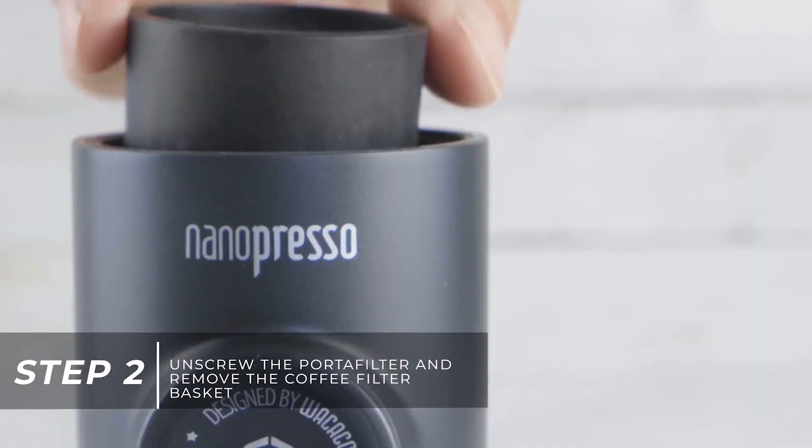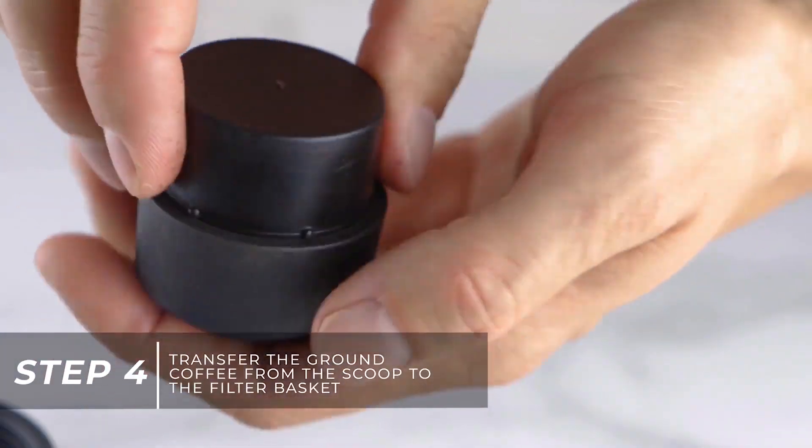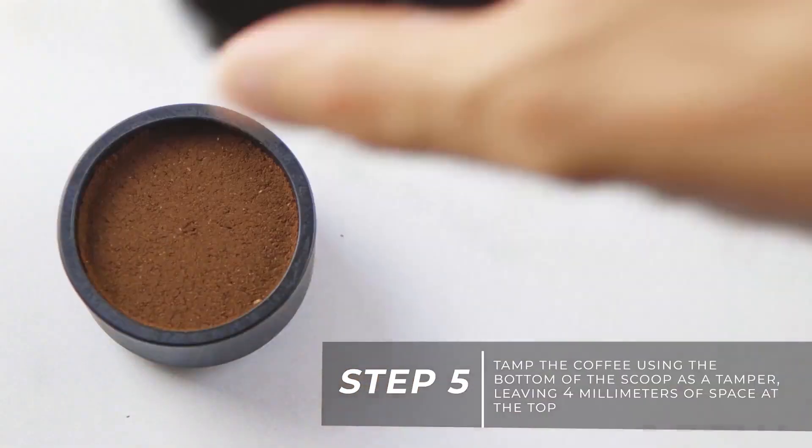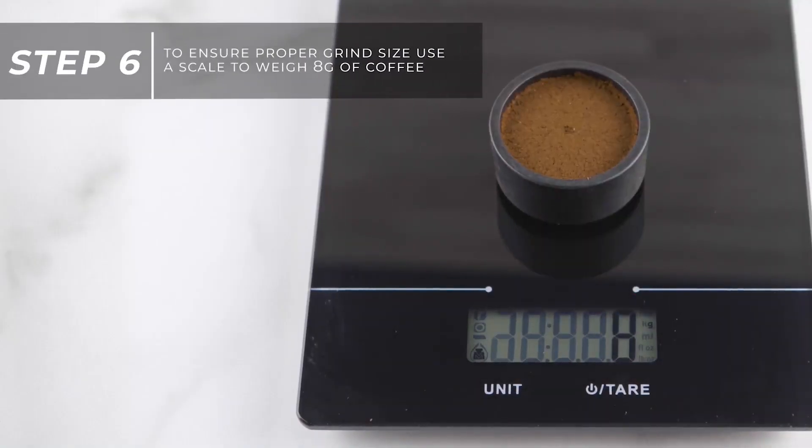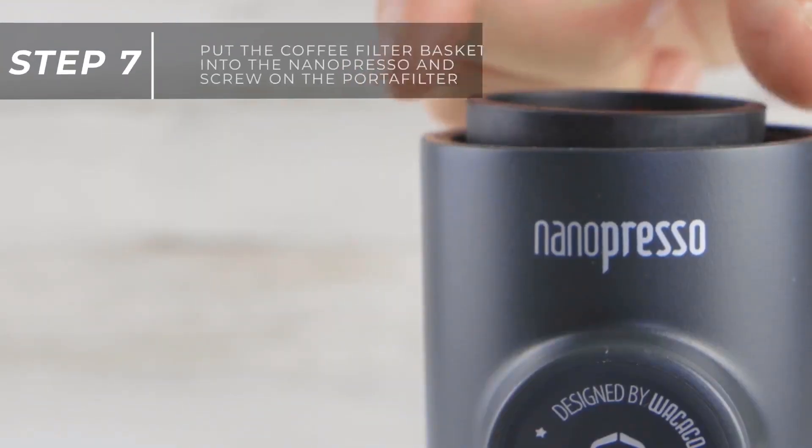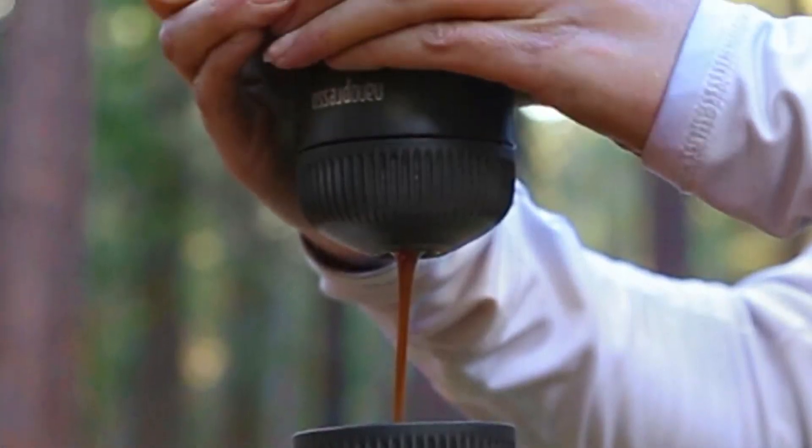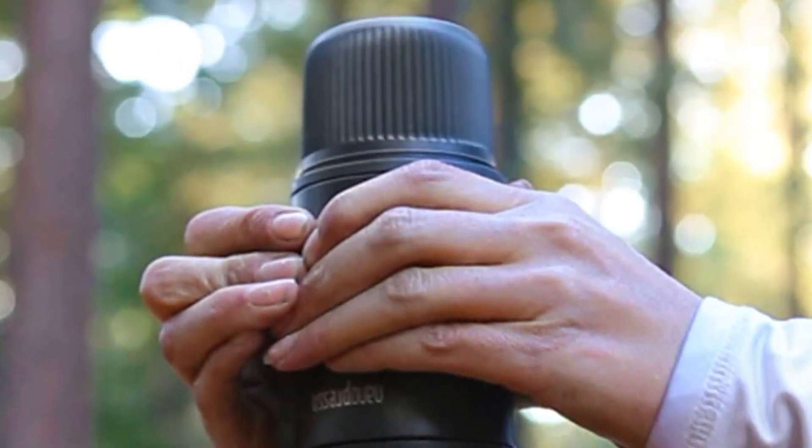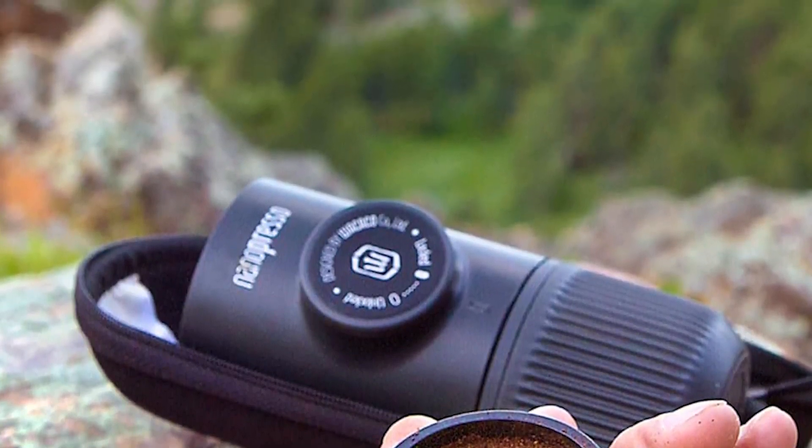This portable espresso maker has impressive power too. It can generate up to 18 bars of pressure with hand power alone, brewing a creamy espresso shot anywhere you also have access to hot water, even somewhere remote like a campground. Relative to its size, it is a pricey gadget, and it's not the easiest to use without some practice. But it's the go-to for travelers and adventurers who are serious about their espresso or Nespresso while traveling. You can be sure you're getting a consistent and affordable beverage no matter where you are.